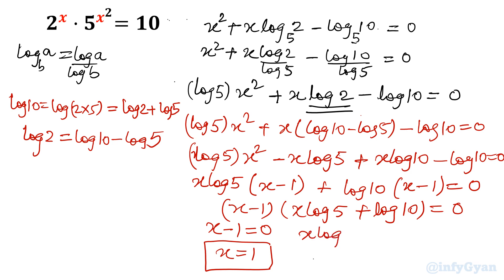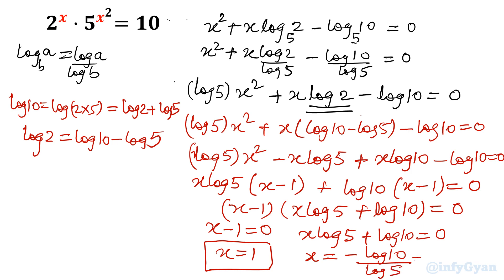For the second bracket: x log 5 plus log 10 equals 0. Since log 10 is ultimately 1, x equals minus log 10 over log 5, which in other words is minus log base 5 of 10. You can verify by putting these two values into the original equation. I hope you liked this video. Thank you so much for watching. Please do not forget to subscribe to my channel. Thanks a lot.